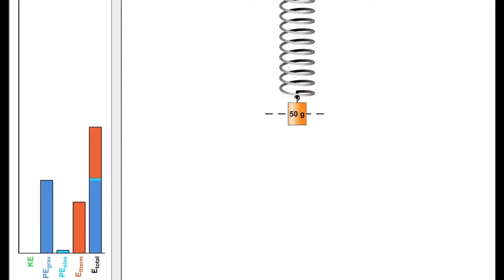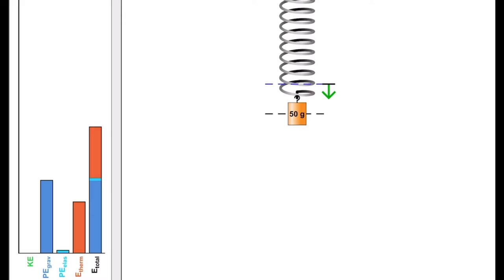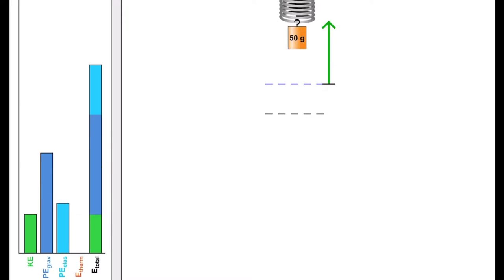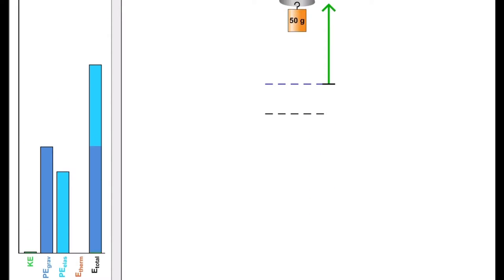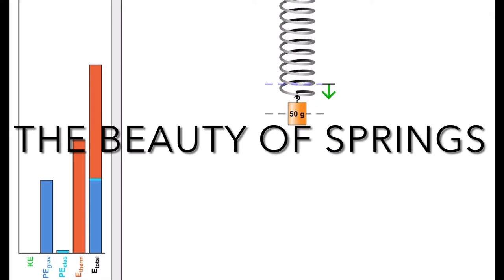You can use the equilibrium point, the natural length, the displacement, and all the factors mentioned earlier to figure out the amplitude and the period of the spring, which is important. You can use their unique energy dynamics to figure out how much energy the system has — from kinetic energy to potential energy to thermal energy from damping — to the total energy in the system. There is a lot more to springs than just this. All of this contributes to what I would consider the beauty of springs.